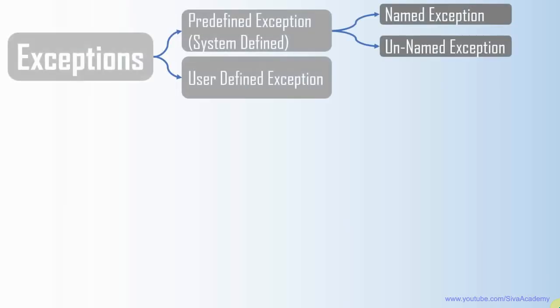To start with, in the earlier videos we have seen about the types of exceptions like named exception, unnamed and user defined exception. Irrespective of the type of the exception, every exception in PL SQL will have two information. One is the error code and another is the error description.